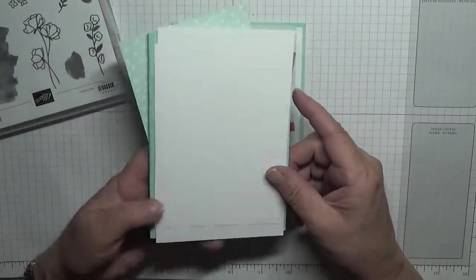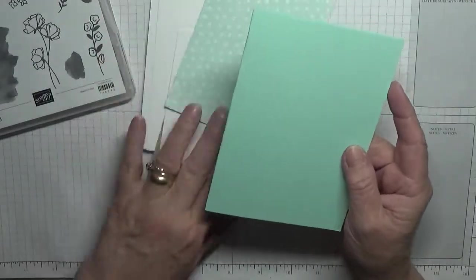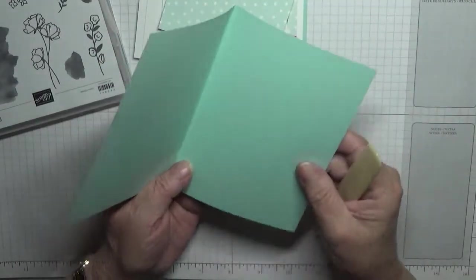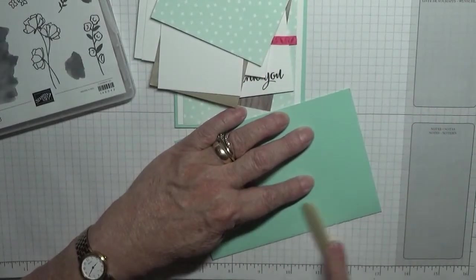The card I'm using is a pool party card base of 8 1/4 by 5 7/8, scored at 4 1/8, folded in half and burnished.